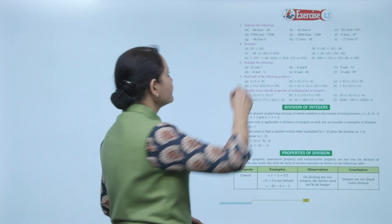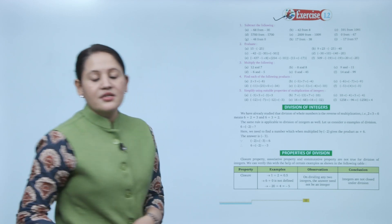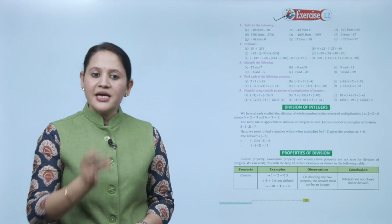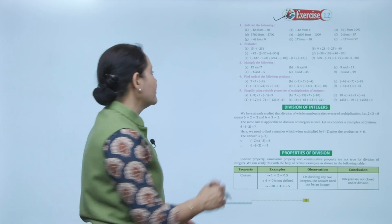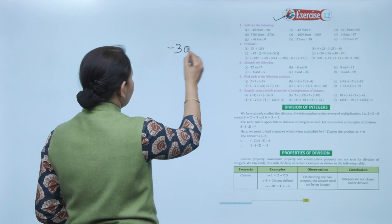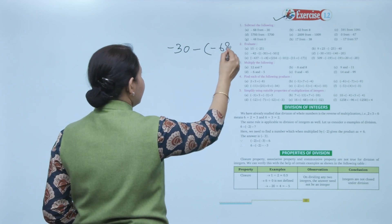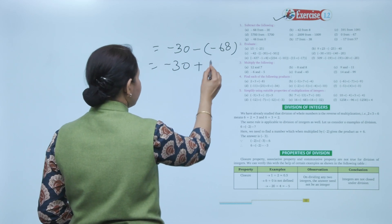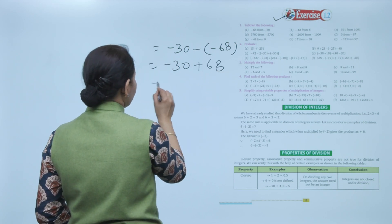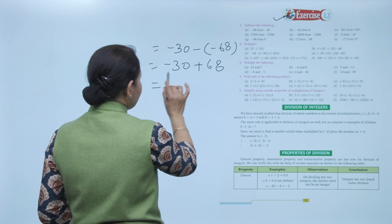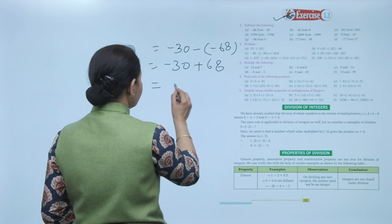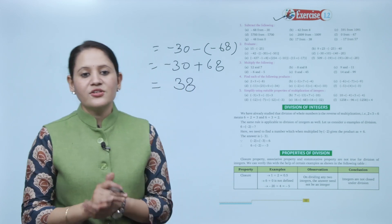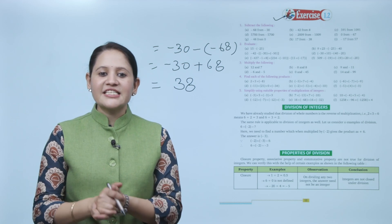Next, Exercise 1.2. Subtract minus 68 from minus 30: minus 30 minus (minus 68) becomes minus 30 plus 68. Since one is negative and the other is positive, the answer is 38. You have to practice all the questions of this exercise. Next is division of integers.